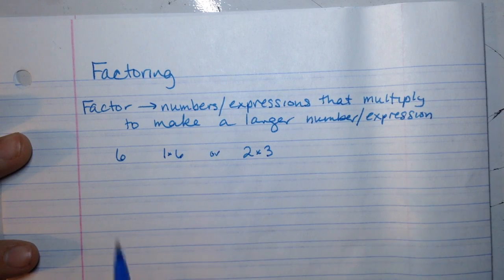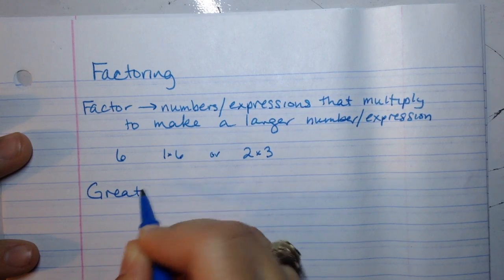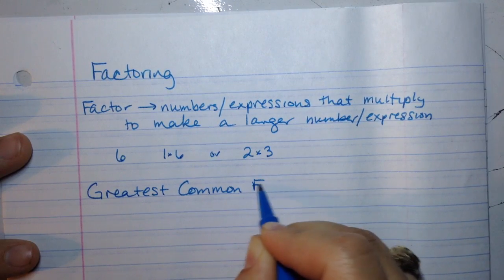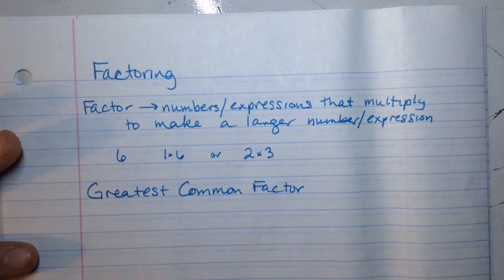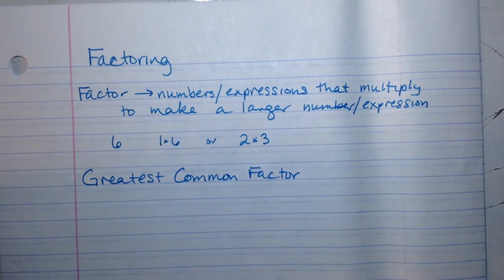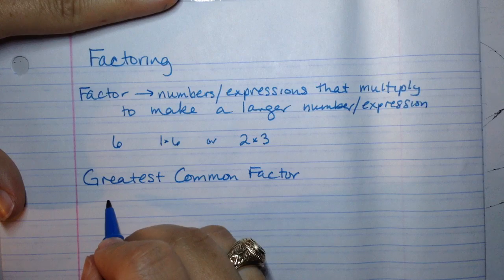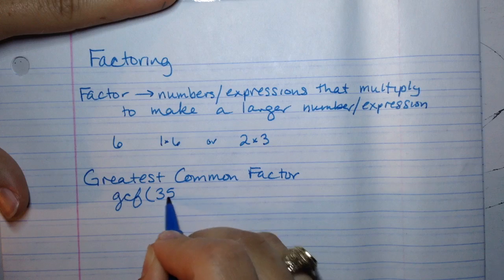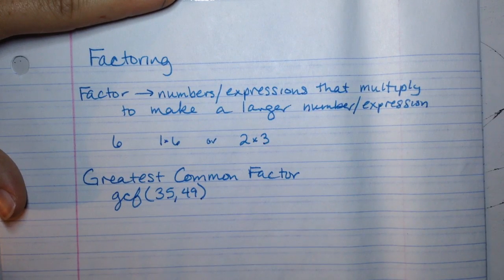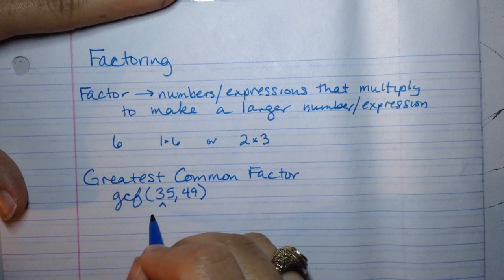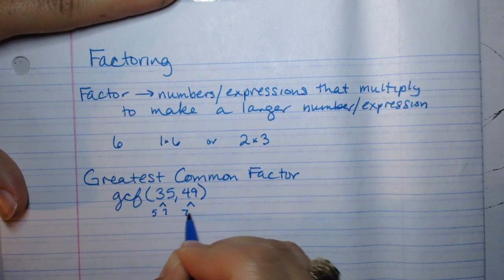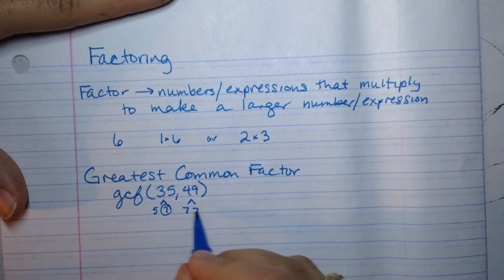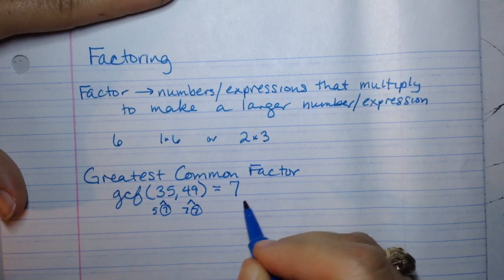Now what we want to look for is what's called a greatest common factor. This GCF is the greatest factor between two terms when we compare them. For example, if we were looking for the GCF between 35 and 49, we break those down into trees knowing that 35 is 5 times 7 and 49 is 7 times 7. The biggest number they have in common is 7, so the GCF is 7.